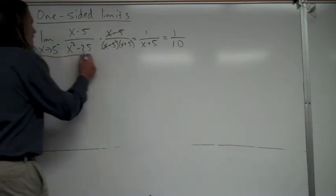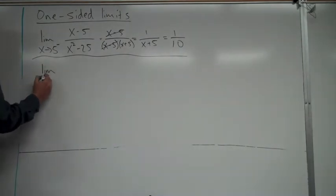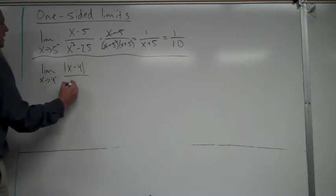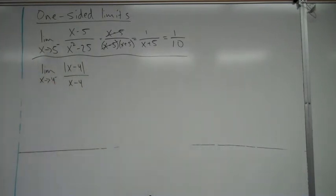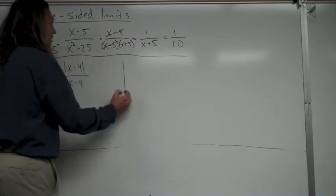There are some cases that are different — ones we haven't looked at much. For example: the limit as x approaches 4 from the left of absolute value of (x minus 4) over (x minus 4). This doesn't fit the previous techniques — plugging in gives 0 over 0, but we can't factor or rationalize. The good approach is to look at a graph, so let's make an xy table centered around x equals 4.